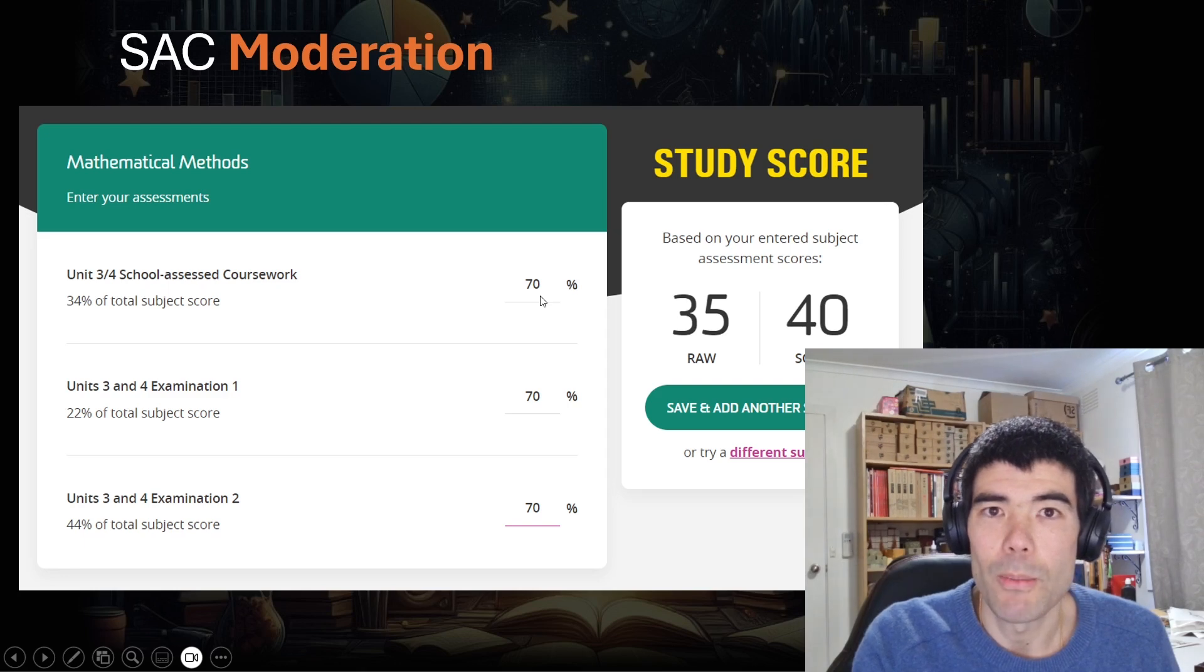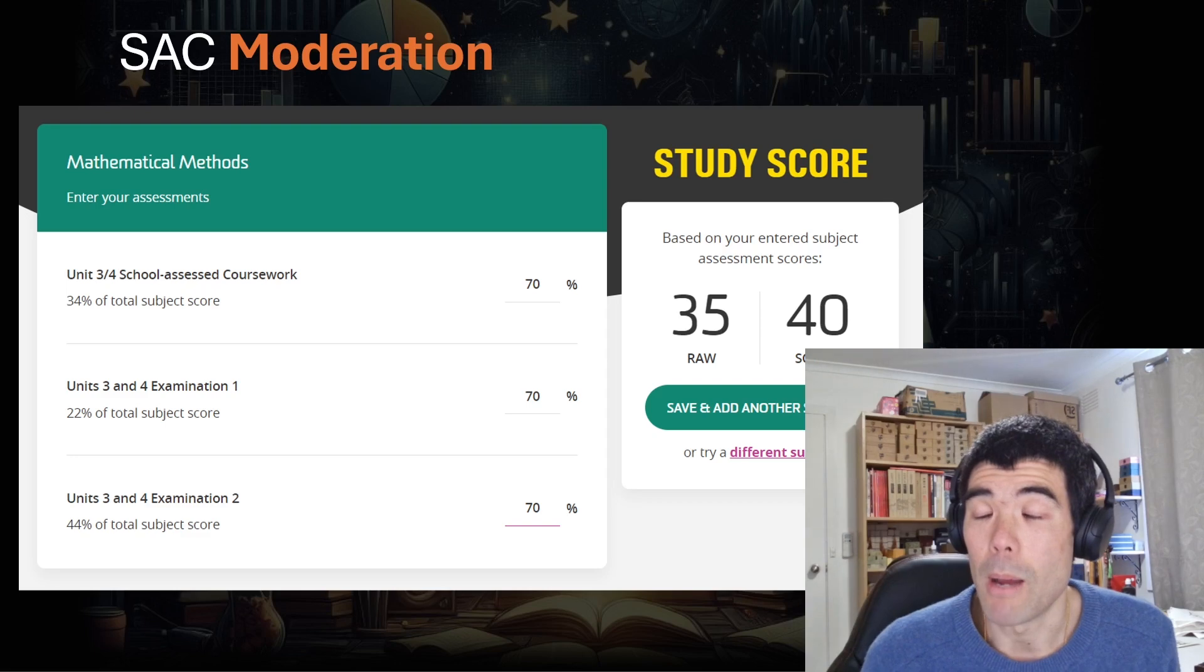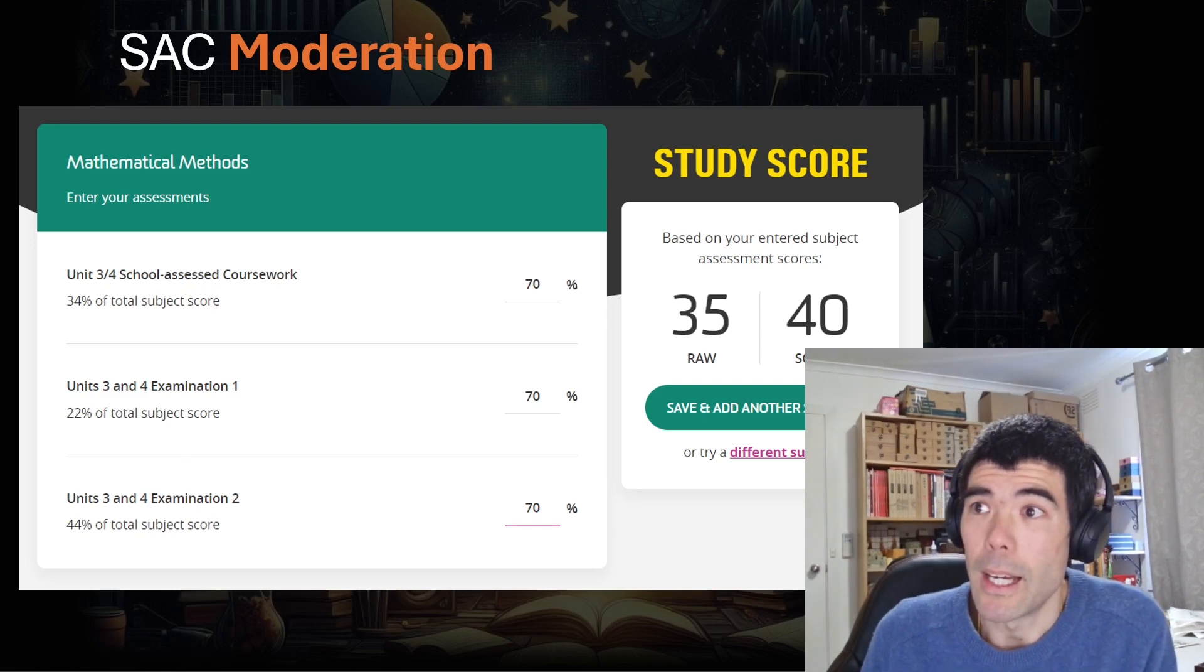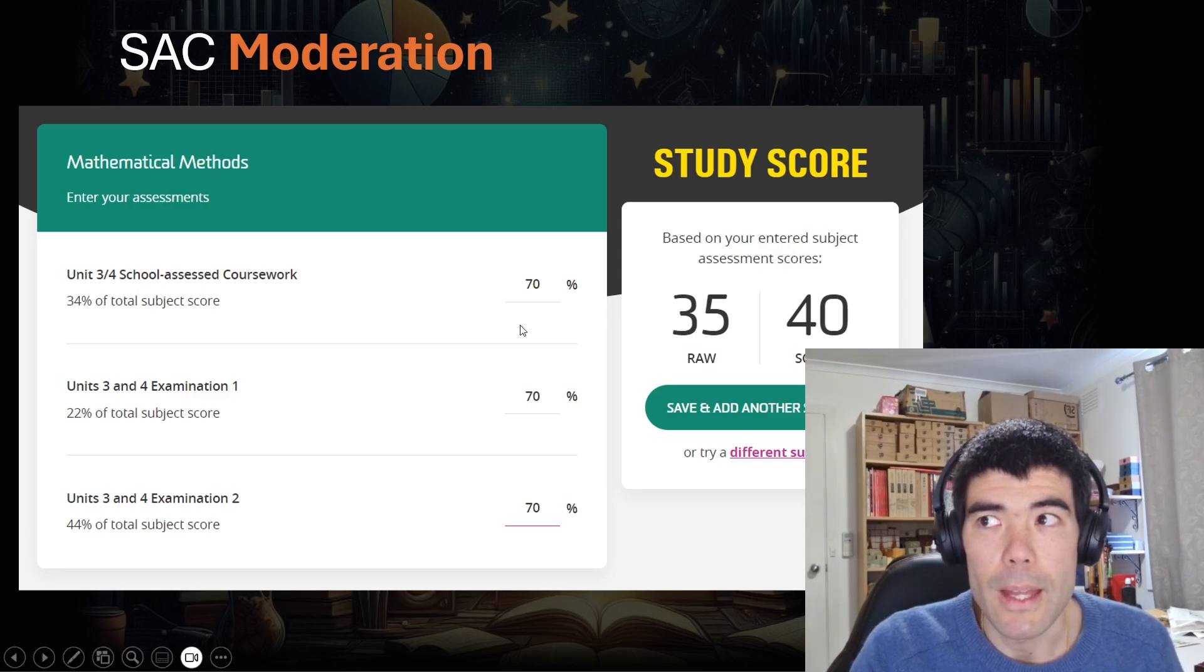If I enter 70% here, that 70% could mean a completely different thing. If the average for that SAC was 50, my 70 might be quite good. But if the average was 75, then my 70 is not as good. Also, if the students that I'm comparing myself against at Melbourne High School, that's going to be very different to a lot of other schools. And that 70% is going to mean something very different again.